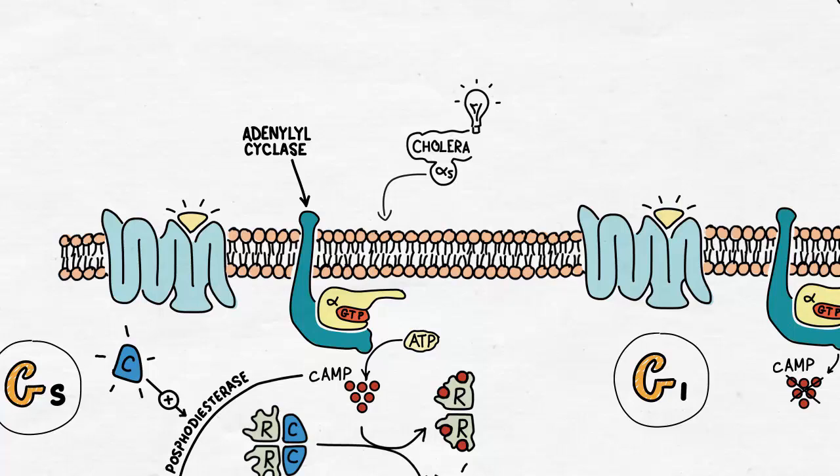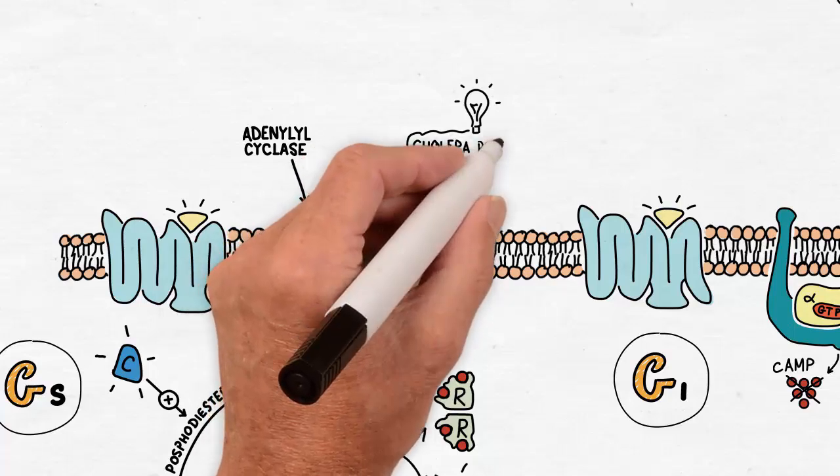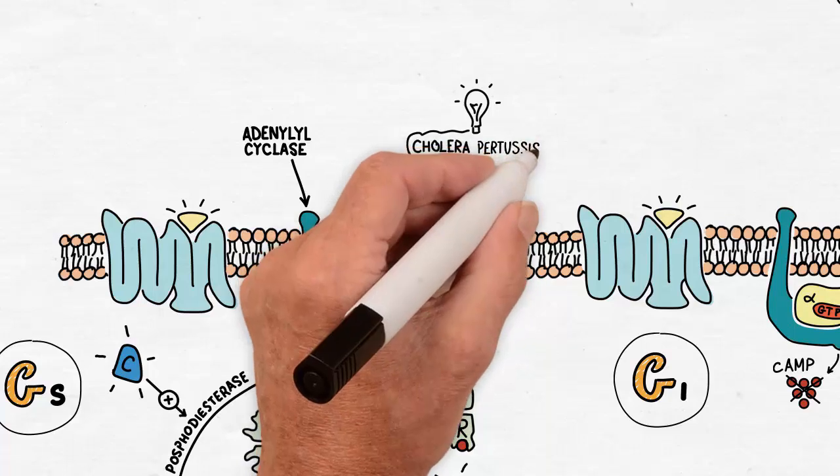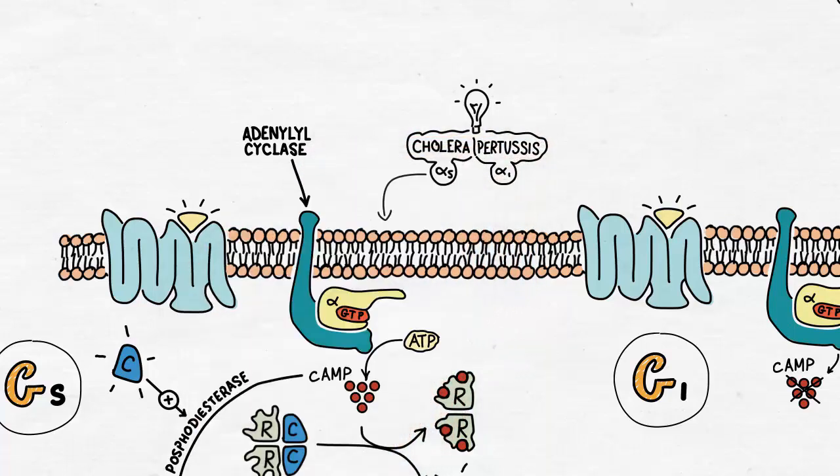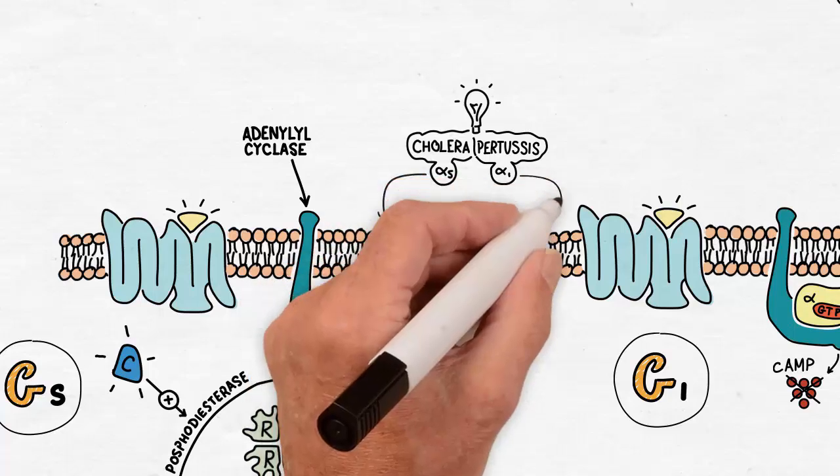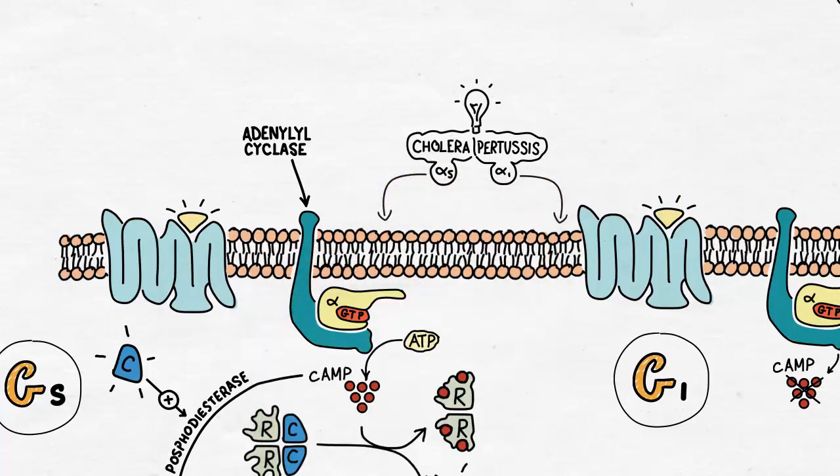leading to severe diarrhea. On the other hand, pertussis toxin produced by Bordetella pertussis inhibits the alpha-I subunit so that the adenylyl cyclase remains active indefinitely too, producing excess cyclic AMP.